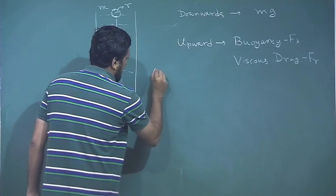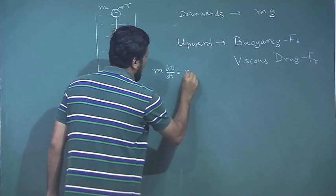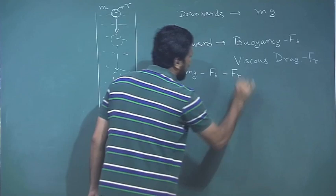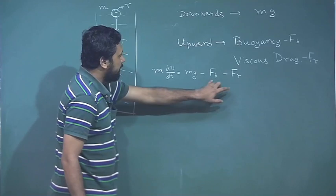If we write the force equation it will be m dv/dt = mg - f_b - f_r, where f_b is the buoyancy force and f_r is the viscous drag.